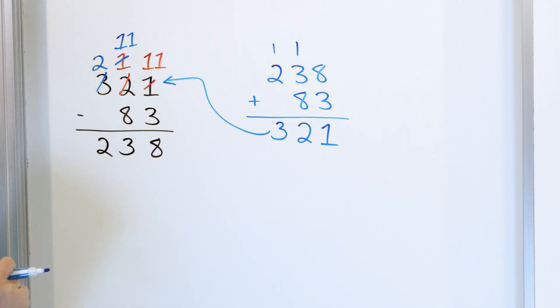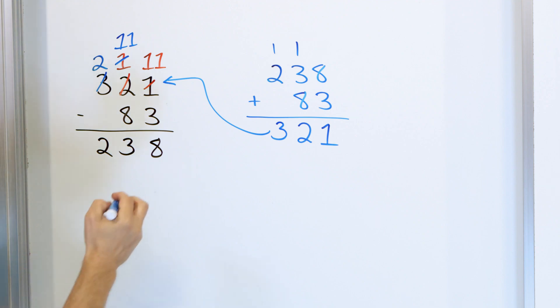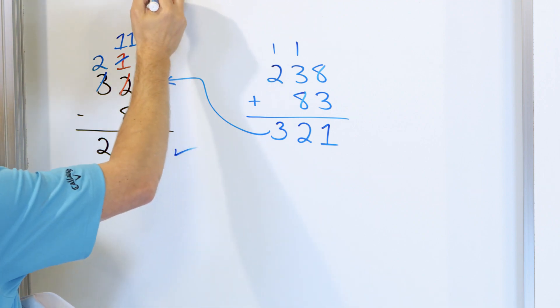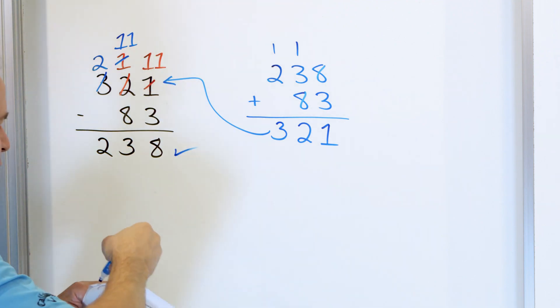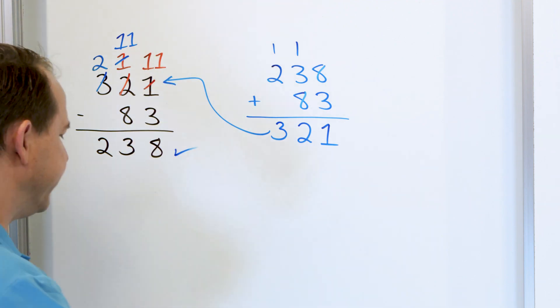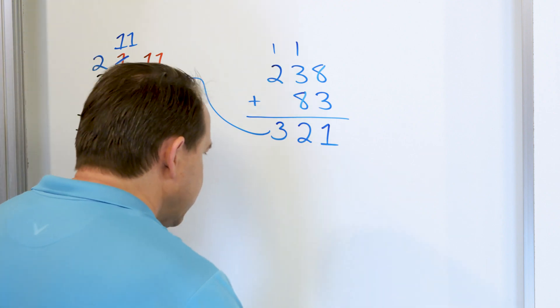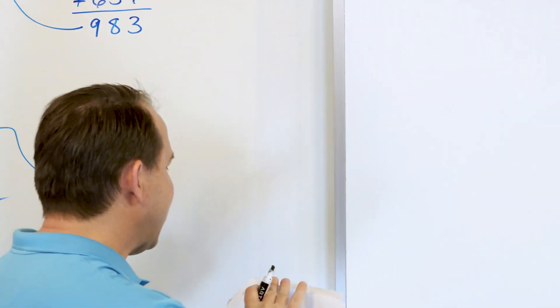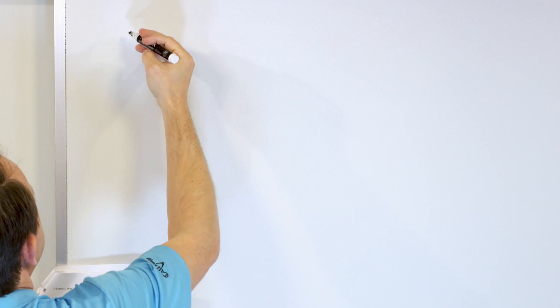That exactly matches our first number, 321, so we got the correct answer there, just like we got the correct answer above. We can always check our subtraction problems by addition — just add back in whatever we subtracted and we should get the top number back.